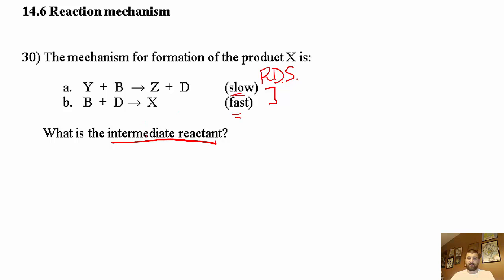is there in the in-between steps. It's made in one step and used up in another step. If you take a look, the first reaction is making D, but then in the second reaction D is being used up.